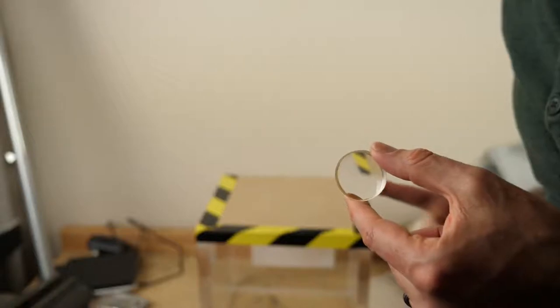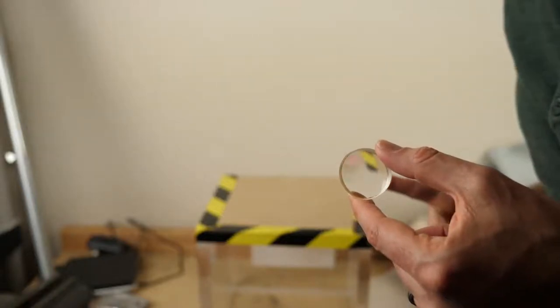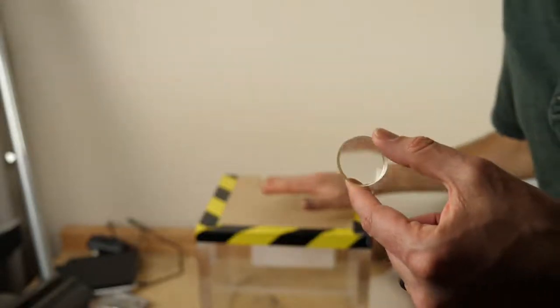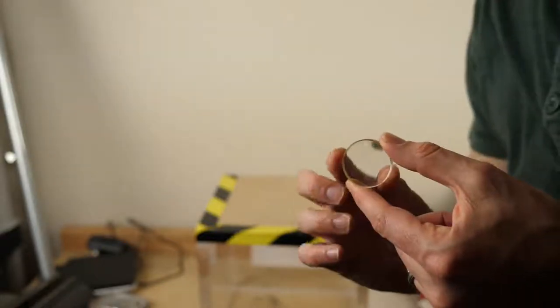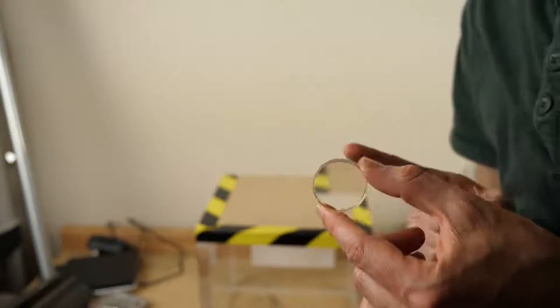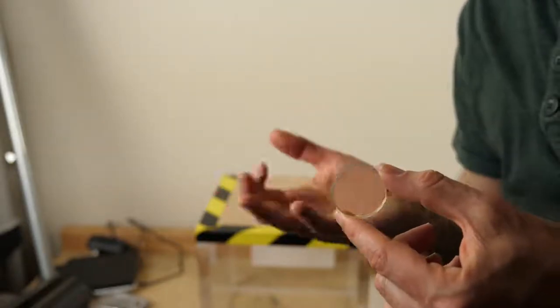For example, this lens here can block the light from my finger in the back. But you can tell there's something there because look at the background. See how the image is flipped and distorted? So you know that there's a lens here. And so that doesn't help block the object, you just know that there's a lens blocking it.